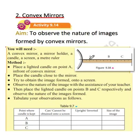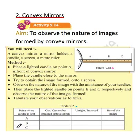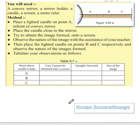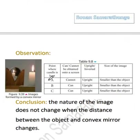You keep the candle at point A while the mirror is very close. Then you record your observation and try to obtain it to a screen. Then you switch the candle to position B and C, see whether you can screen it, and record your observation. Then you can tabulate it in the following table. If you perform this activity properly, in instance A it cannot be screened. In instances B and C, it can be screened — you can obtain it to a screen.